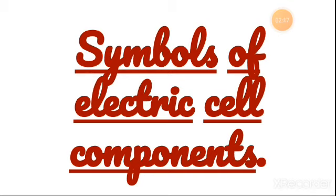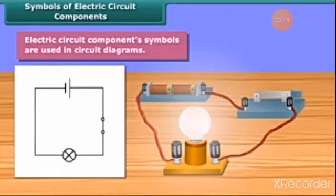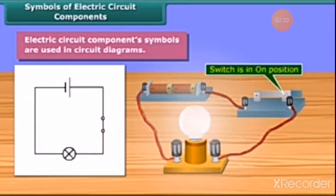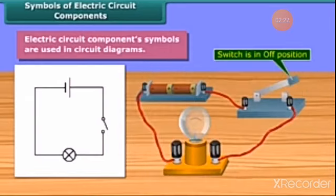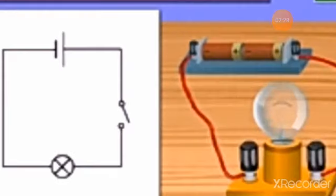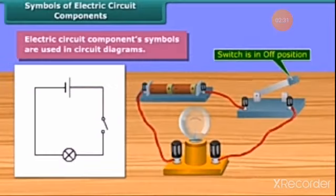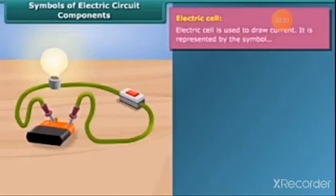Electric circuit component symbols are used in circuit diagrams. It is much easier to represent a circuit diagram using symbols. This is the symbol of a switch in ON position. This one is in OFF position. Next is, Electric cell is used to draw current. It is represented by this symbol.